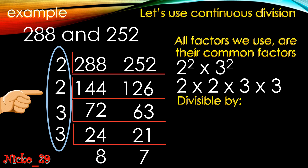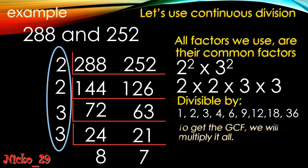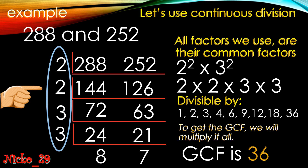Using 2 × 2 × 3 × 3, we can list the common factors: 1, 2, 3, 4, 6, 9, 12, 18, and 36. We get these by combining: 2 alone, 3 alone, 2×2=4, 2×3=6, 3×3=9, 2×2×3=12, 3×3×2=18, and 2×2×3×3=36. To get the GCF, we multiply all the divisors we used — so the GCF is 36, which is automatically the largest among all the common factors listed.